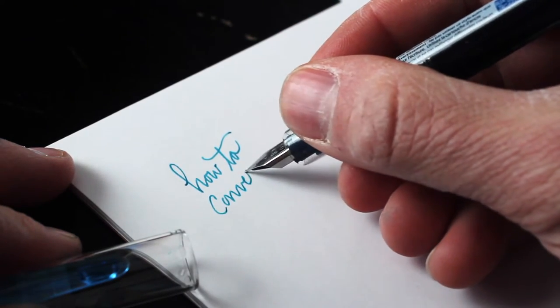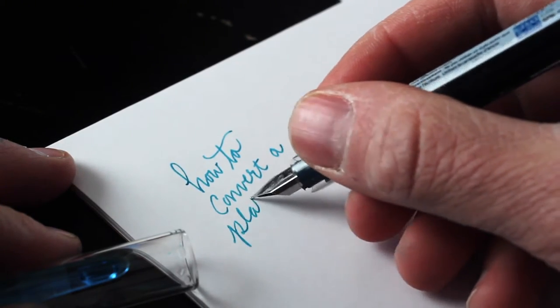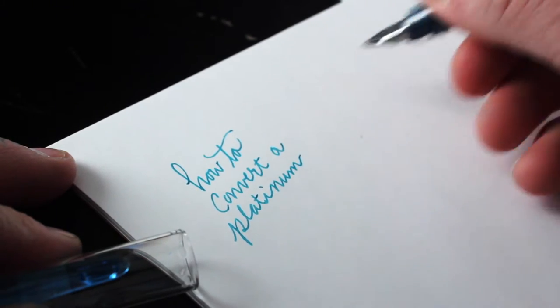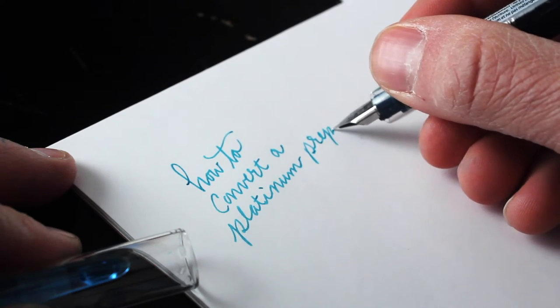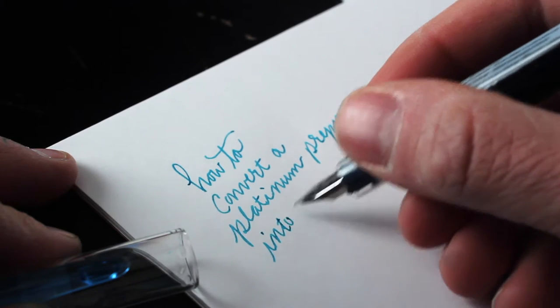The reason why you would want to do this is because certain fountain pens may lack a converter or their converter does not provide an ample supply of ink. So sometimes you just want to ditch the entire cartridge converter system and fill up the entire barrel full of fountain pen ink.